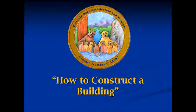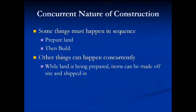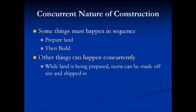In looking at how we construct a building, we'll get into the various details eventually, but I want to first look at the concurrent nature of construction. Whenever you're building something, the various types of things that can happen need to be installed — in some cases sequentially — but there are things that can happen at roughly the same time by different people in order to eventually get their place into the whole building construction.